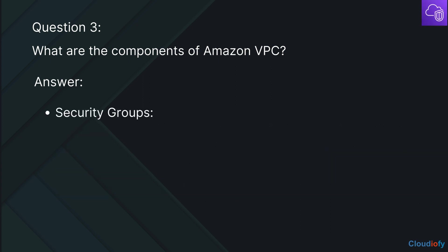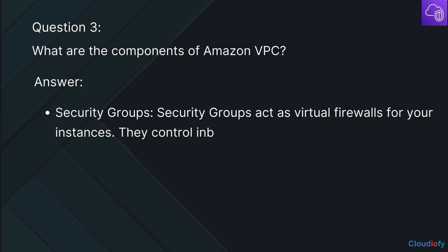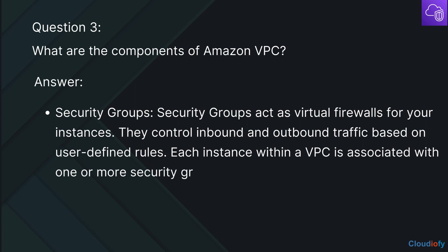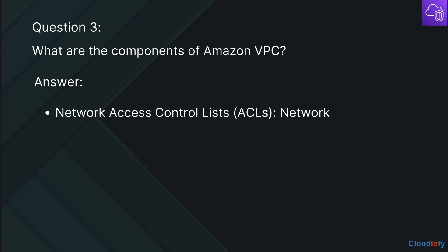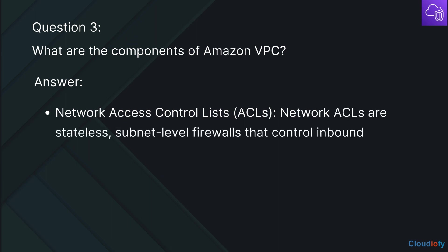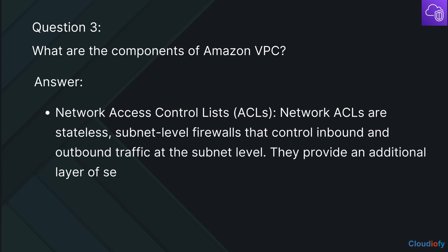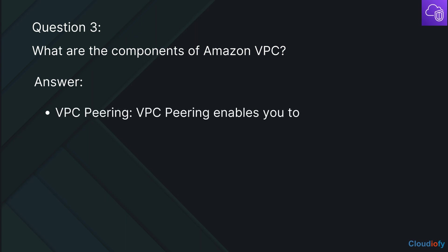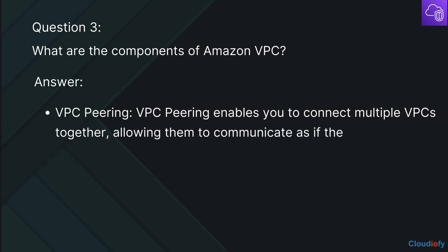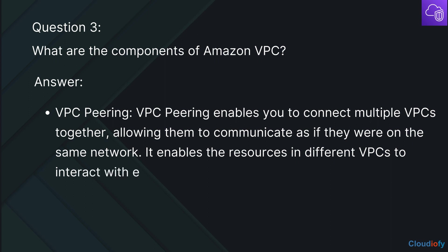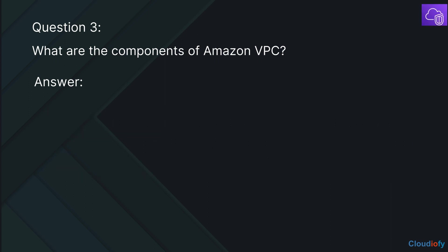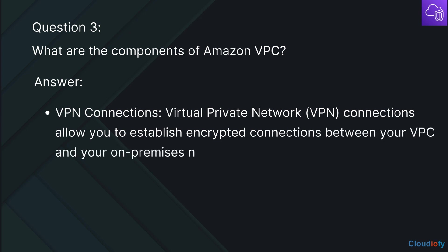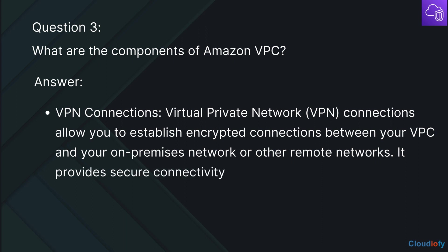Security groups act as virtual firewalls for your instances. They control inbound and outbound traffic based on user-defined rules, and each instance within a VPC is associated with one or more security groups. Network Access Control Lists (ACLs) are stateless, subnet-level firewalls that control inbound and outbound traffic at the subnet level, providing an additional layer of security by allowing or denying traffic based on rules you define. VPC Peering enables you to connect multiple VPCs together, allowing them to communicate as if they were on the same network, letting resources in different VPCs interact using private IP addresses. VPN Connections allow you to establish encrypted connections between your VPC and your on-premises network or other remote networks, providing secure connectivity for resources in your VPC.